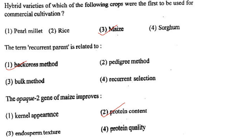Next one: The term recurrent parent is related to option 1, back cross method; option 2, pedigree method; option 3, bulk method; option 4, recurrent selection. Answer is option 1: back cross method.